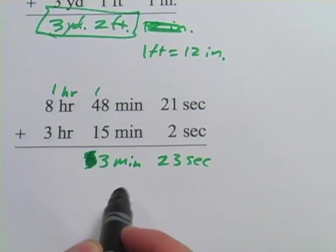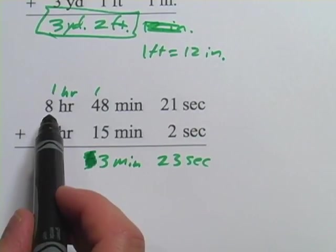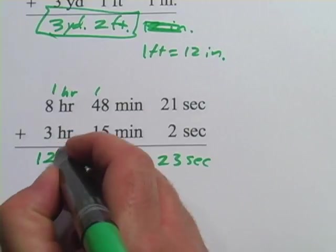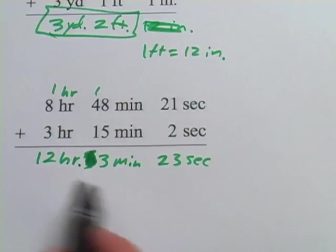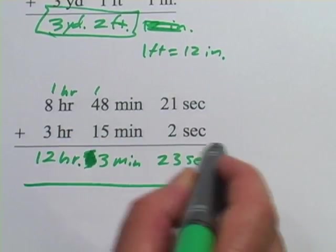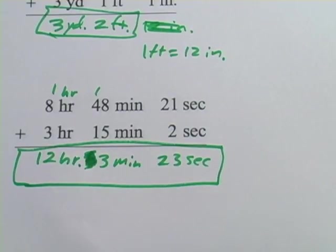So I want to leave that three minutes, and now I've got one plus eight is nine plus three is twelve hours, and my final answer is twelve hours, three minutes, and twenty-three seconds. So that's some addition with different units.